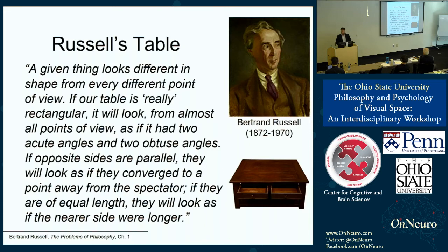Here is a quote from the first chapter of The Problems of Philosophy. Russell says: a given thing looks different in shape from every different point of view. If our table is really rectangular, it will look from almost all points of view as if it had two acute angles and two obtuse angles. If opposite sides are parallel, they will look as if they converge to a point away from the spectator. If they're of equal length, they will look as if the nearer side were longer.